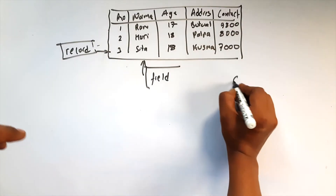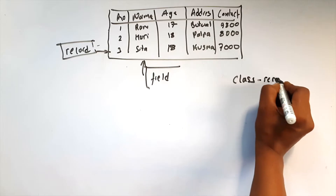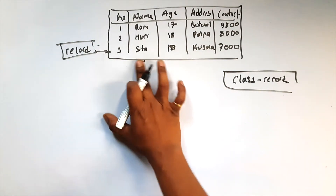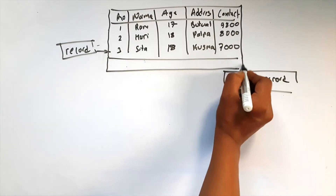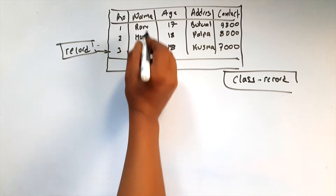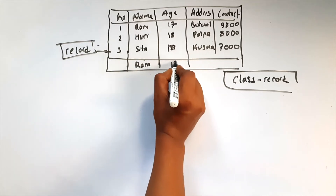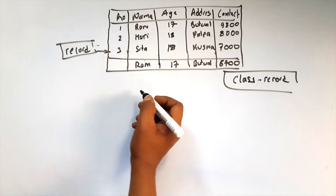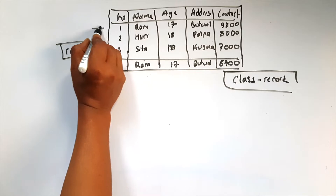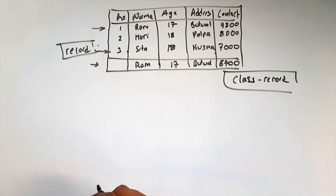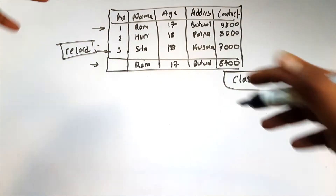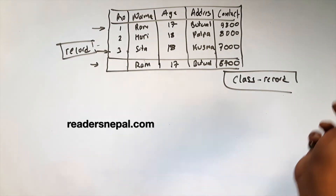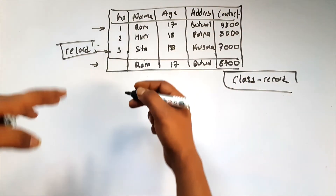Suppose in a class record with records 1, 2, 3 — a new student is admitted. The student's name is Ram Bahadur, another is Ram Kumar. Both are age 17, same phone number 6700. So two RAMs are in my class. Two RAM records exist — both age 17. We have a problem identifying them.